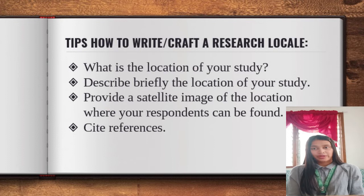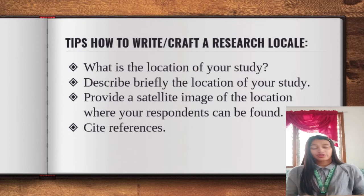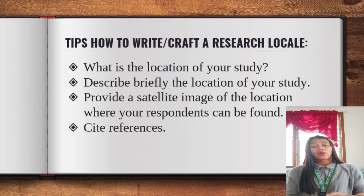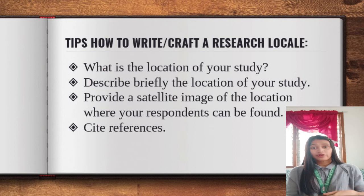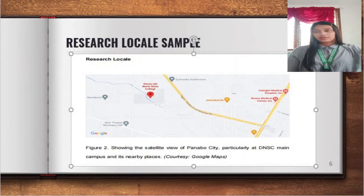In writing research locale in your manuscript, the part should discuss the place or the setting of the study. Then discuss briefly the location of your study. Then provide a satellite image of the location where your respondents can be found. And then cite references for proper credit of the source, to avoid plagiarism.